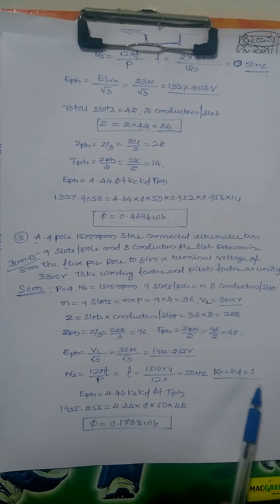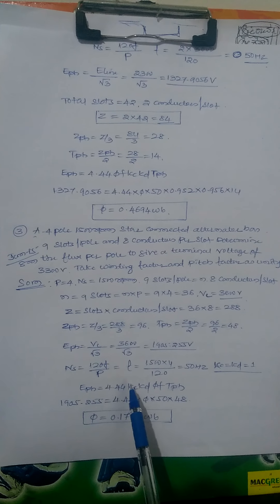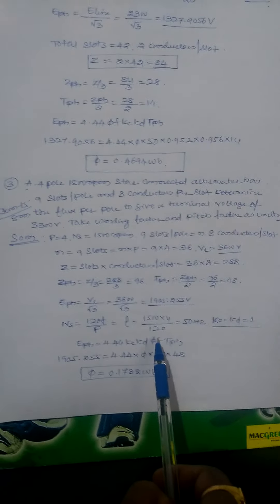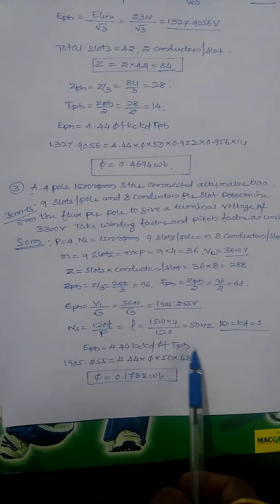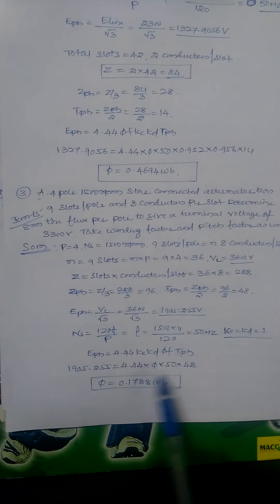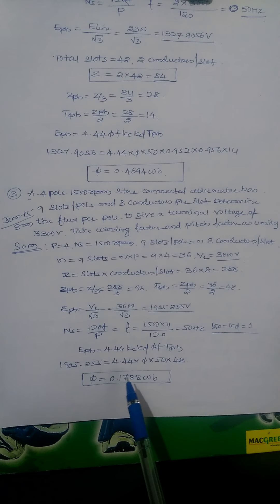KC and KD equal 1. E phase equals 4.44 KC KD flux frequency T phase. Just putting all the values, you get flux value 0.1788 weber.